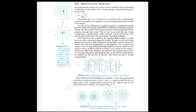The electric field lines for a single charge q are radial lines starting from or ending at the charge, depending on whether q is positive or negative. The electric field at every point is normal (perpendicular) to the equipotential surface passing through that point. This is true in general for any charge configuration.